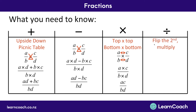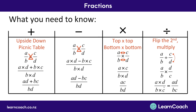Lastly, we have to flip the second fraction and multiply whenever we want to divide two fractions. So here we have a over b divided by c over d. Our first step is to flip c divided by d upside down. Now that gives us a over b multiplied by d over c because now it's a multiplication problem. Then again, top times top and bottom times bottom, giving us a times d on top and b times c on the bottom of the fraction.